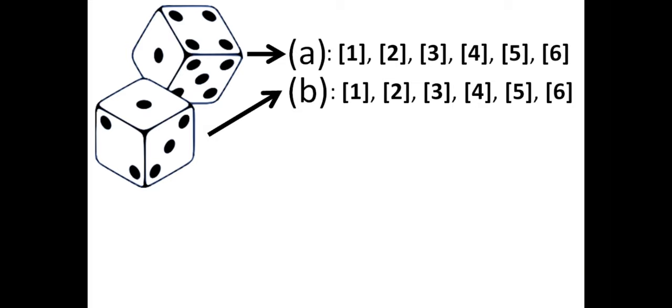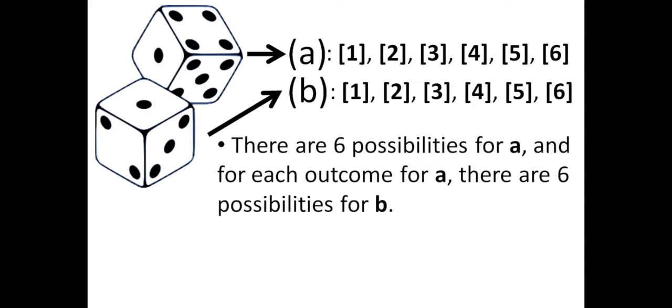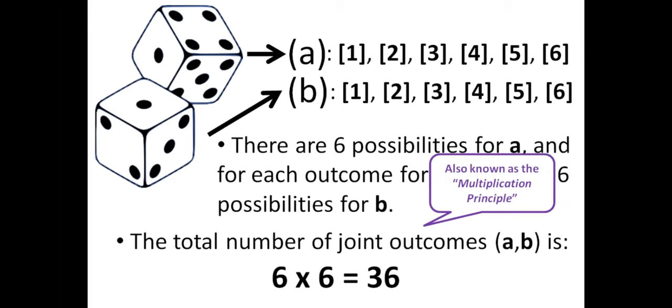Alternatively, we could expand the number of possibilities by adding an extra dice. So, one dice is represented by the letter A, and the other one by the letter B. So, we could ask what is the probability of obtaining a number 4? However, since we have two dice, our sample space consists of all the possible outcomes coming from both dice. Which means that for each outcome of A, there are six possibilities for B. So, the total number of outcomes A and B is six times six, which is 36. This would also be known as an example of the multiplication principle.